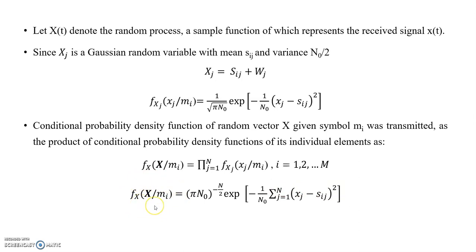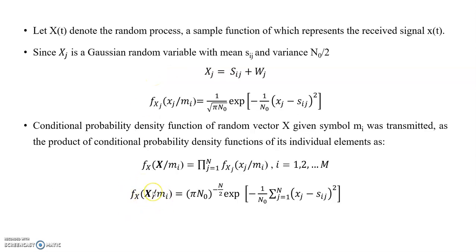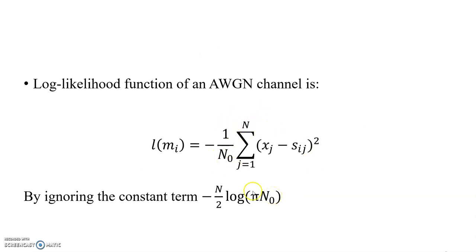The conditional probability density function is by definition the likelihood function. Taking the logarithm gives the log likelihood function. This yields two terms: the first is −(N/2) · log(π N₀), which is a constant, and the second is −(1/N₀) · Σⱼ₌₁ᴺ (x_j − s_ij)². Since the first term is a constant, it can be ignored. So the log likelihood function is: Λ(m_i) = −(1/N₀) · Σⱼ₌₁ᴺ (x_j − s_ij)².